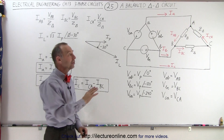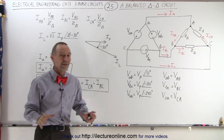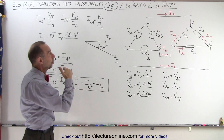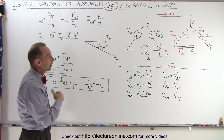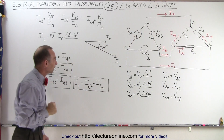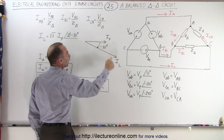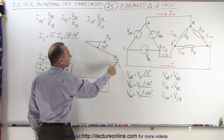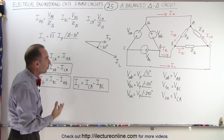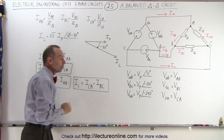However, on the load side, we still have the line currents and the phase currents. Those are exactly the same as the line and phase currents of a Y-delta circuit, because the load is exactly the same. The line current is larger than the phase current by a factor of the square root of three, and the line current lags the phase current by an angle of 30 degrees.